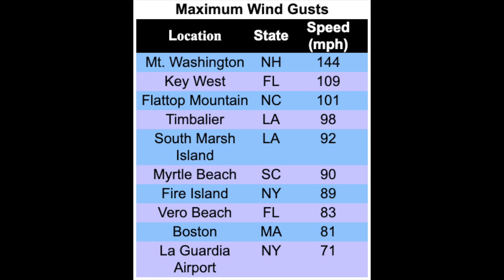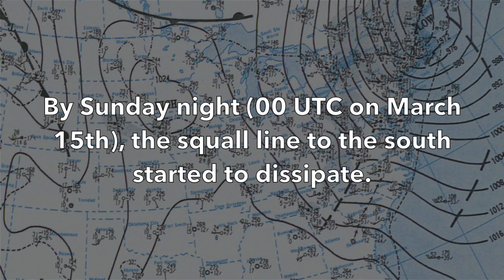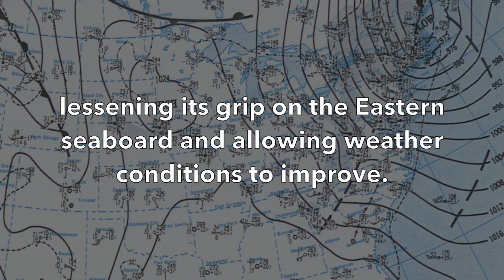Wind gusts at Mount Washington, New Hampshire were recorded at 144 miles per hour. The low continued to move northward over the next 24 hours into Canada, with one last gasp of strength as it moved across the coastal region of the Labrador Sea. By Sunday night — zero UTC on March 15th — the squall line to the south started to dissipate. As the hours passed, the low exiting Canada continued to move out to sea, pushing further into the North Atlantic, lessening its grip on the eastern seaboard and allowing weather conditions to improve.